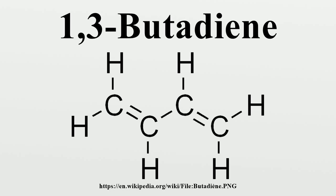Butadiene can also be produced by the catalytic dehydrogenation of normal butane. The first such post-war commercial plant, producing 65,000 tons per year of butadiene, began operations in 1957 in Houston, Texas. Prior to that, in the 1940s, the U.S. War Department constructed several plants in Borger, TX, Toledo, Ohio, and El Segundo, CA to produce synthetic rubber for the war effort as part of the United States synthetic rubber program.